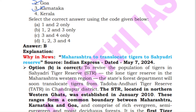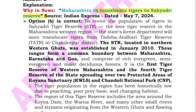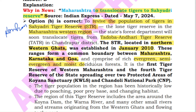The Maharashtra state government decided to translocate tigers to the Sahyadri Tiger Reserve because the tiger population there had started declining. Sahyadri Tiger Reserve is located in the western region of Maharashtra in the Northern Western Ghats, known as the Konkan region. It forms a common boundary between Maharashtra, Karnataka and Goa, featuring evergreen, semi-evergreen and moist deciduous forests. It is the first tiger reserve in western Maharashtra and the fourth tiger reserve of the state, covering two protected areas: Koyna Wildlife Sanctuary and Chandoli National Park.